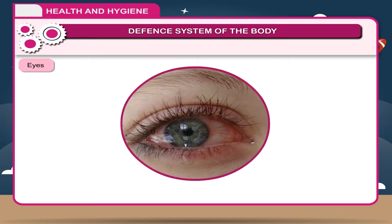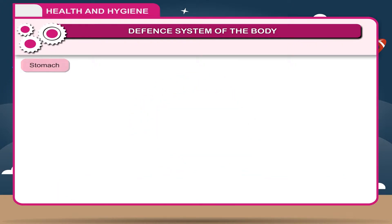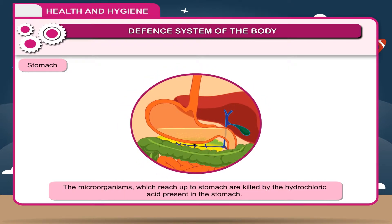Eyes — tears help in washing the eyes. They have lysozyme, an enzyme that kills microorganisms and protects us from foreign matter and infection. Stomach — the microorganisms which reach the stomach are killed by the hydrochloric acid present there.